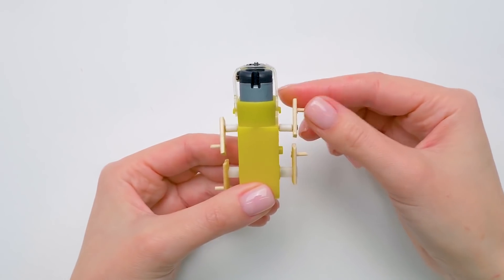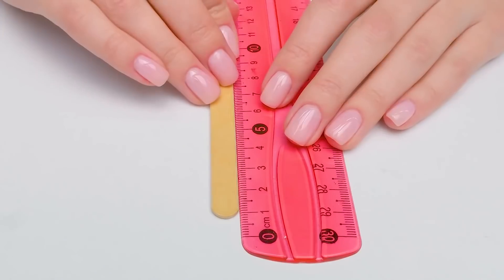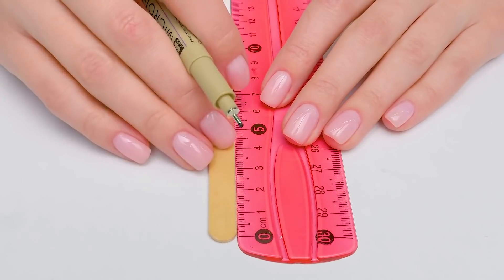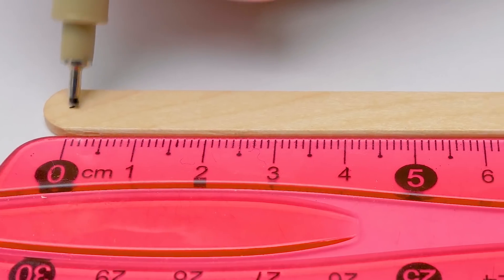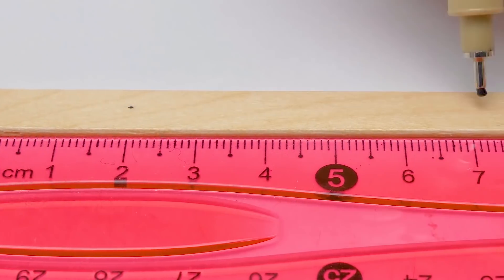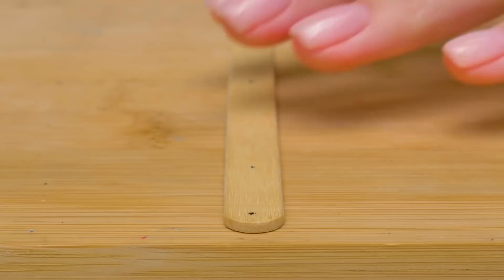I've already secured the sticks with glue. We can proceed. The legs of our robot are going to be long. Seven centimeters from the upper hole to the lower edge. The remaining part we'll just cut.